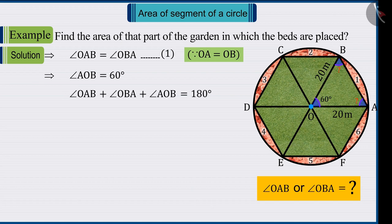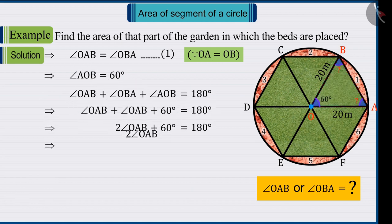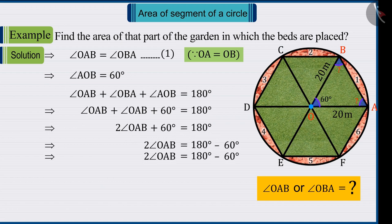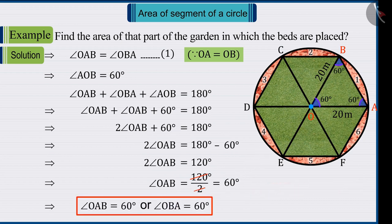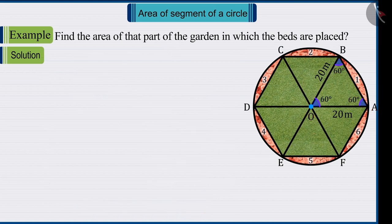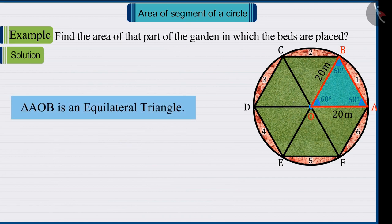Absolutely correct. Since we know that the sum of all angles of a triangle is 180 degrees, therefore the value of angle OAB or OBA will be 60 degrees. So, we can say that triangle AOB is an equilateral triangle with all sides equal.